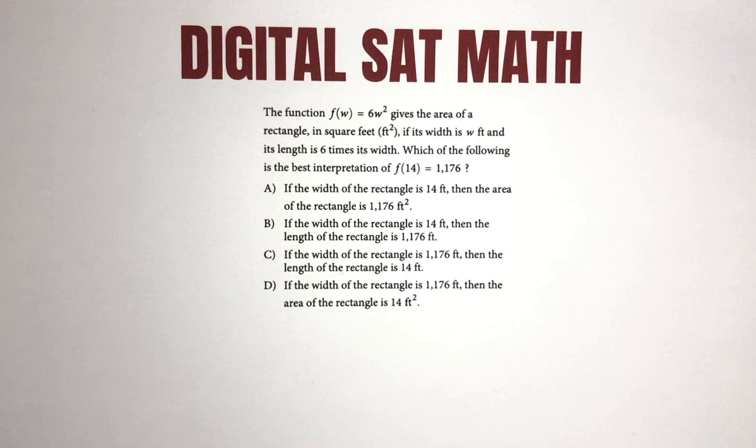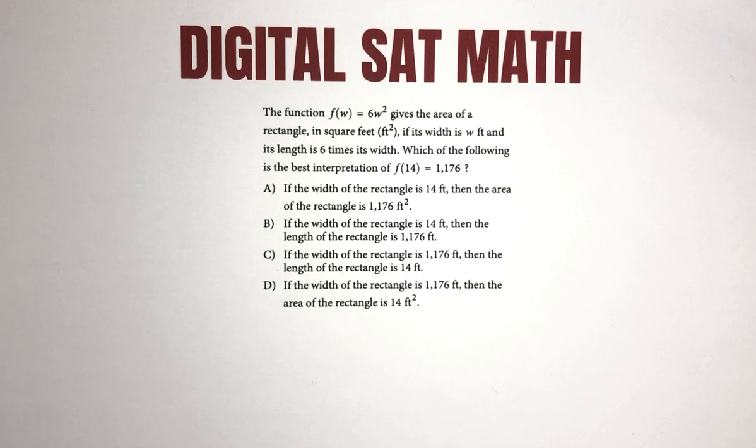Choice A: If the width of the rectangle is 14 feet, then the area of the rectangle is 1,176 feet squared. Choice B: If the width of the rectangle is 14 feet, then the length of the rectangle is 1,176 feet.